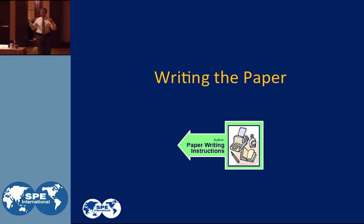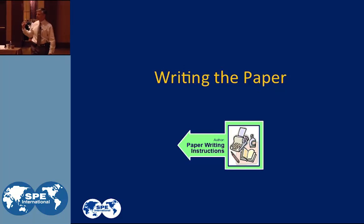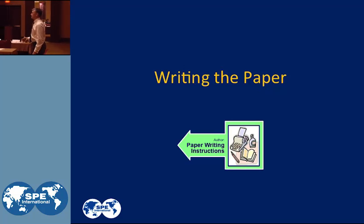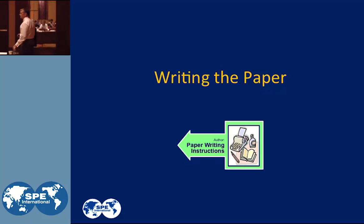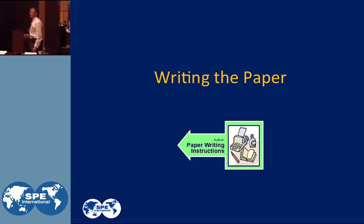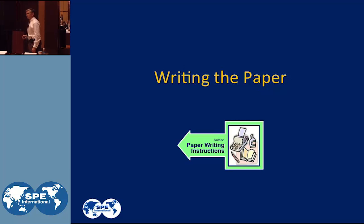Writing the paper. Once you have submitted your abstract and the program committee has accepted it, they're going to send you some writing instructions for this paper. Those writing instructions are going to be in the form of an SP template. There are going to be some guidelines as to how to write your paper, put an outline together, how to cite references, things of that nature.